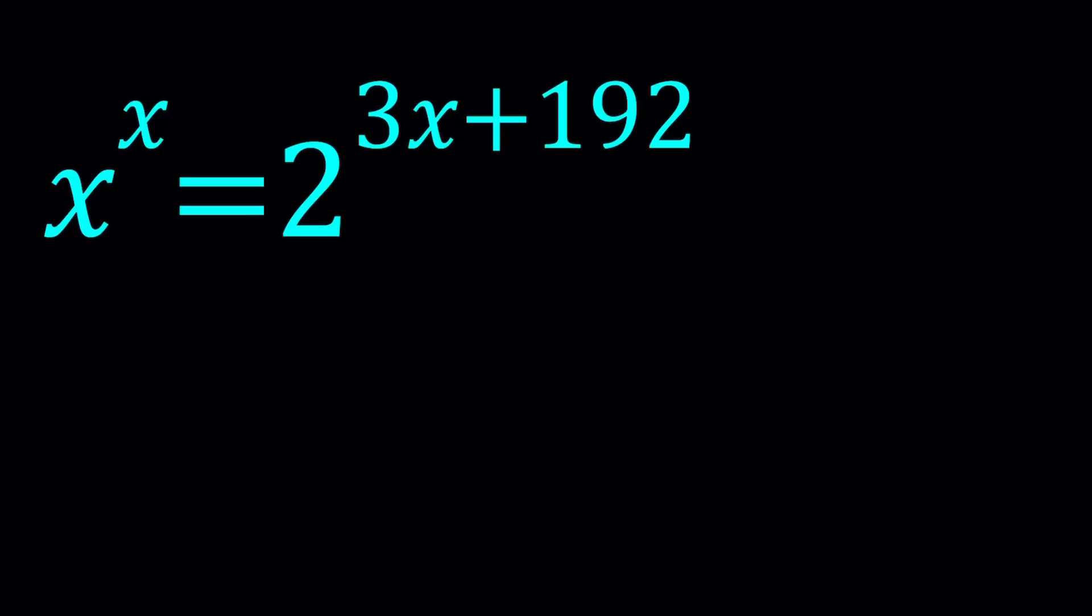Now we're going to split the expression on the right hand side first. So let's write this as x to the power x equals 2 to the power 3x times 2 to the power 192.